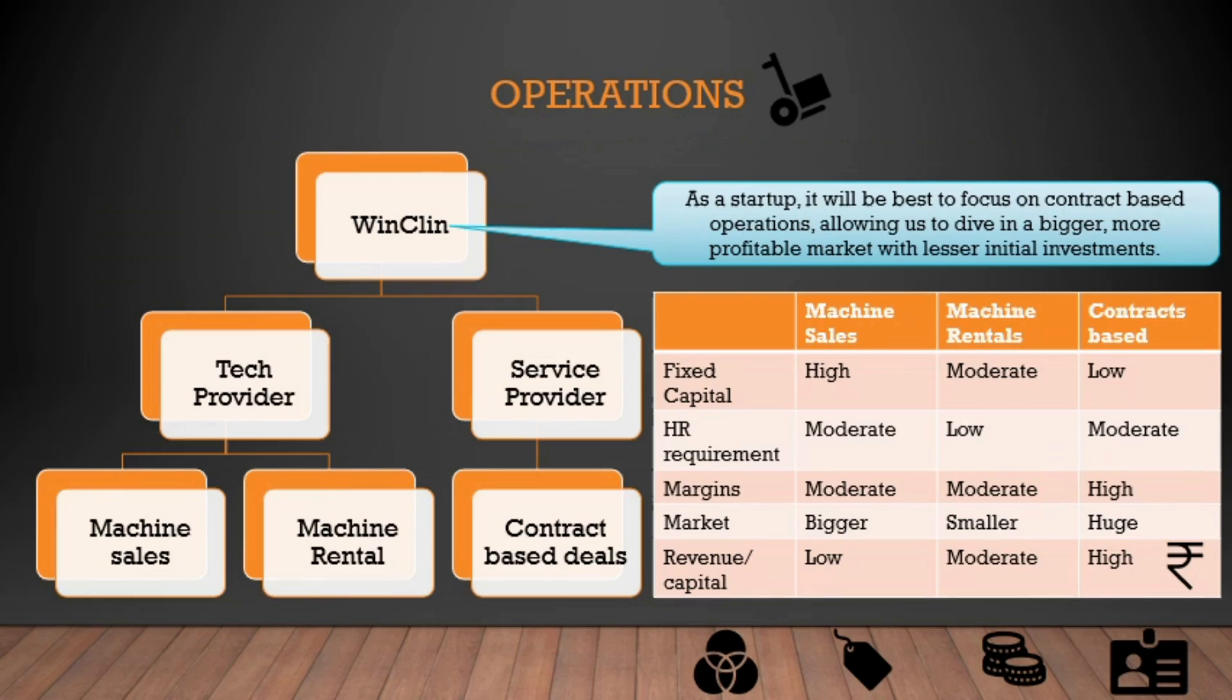Now, we talk about our plan for operations. We can be a tech provider by selling our machines to customers or by renting them out to third parties. The other way is to be a service provider ourself by taking up contracts for facade cleaning. The best idea is to do all of this but we analyze the different factors like capital and HR requirement, margins in the business, market size and revenue to identify what's best for us to start with. We comfortably conclude that being a startup, it will be best for us to focus on contract-based operations, allowing us to dive in a bigger and more profitable market with lesser initial investments.